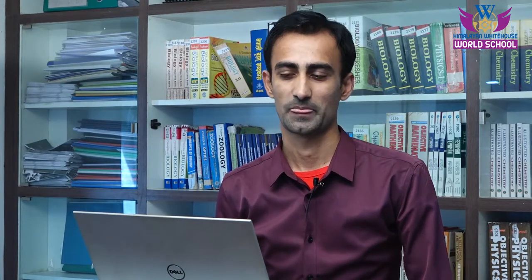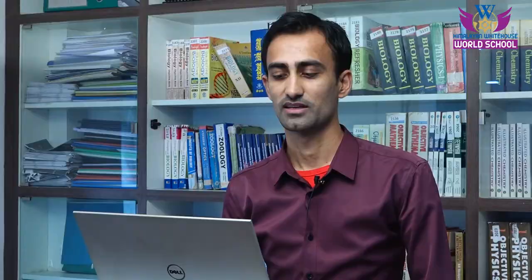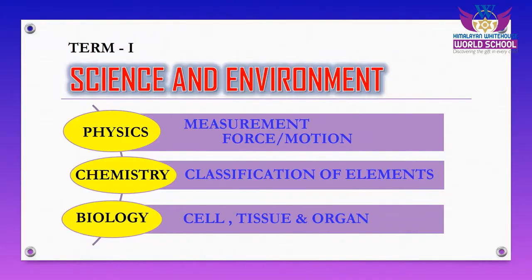Under the different branches of science, we have two different topics under physics: measurement, and force and motion. We have classification of elements from chemistry. Similarly, we have cell, tissue, and organs from biology for this term. Let's start with the first unit: measurement.